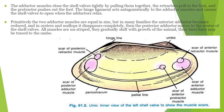Adductor muscles close the valve tightly by pulling them together. The retractor pulls in the foot. Adductor muscles are responsible for closing the valves, while retractor and protractor muscles are related to the foot movement.